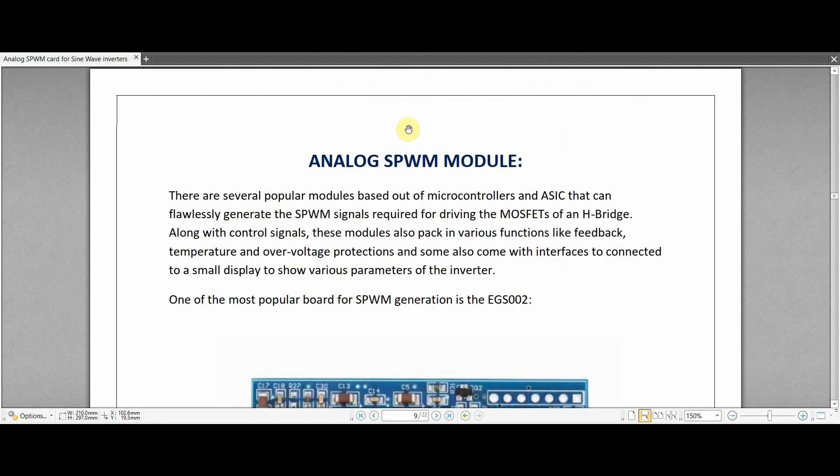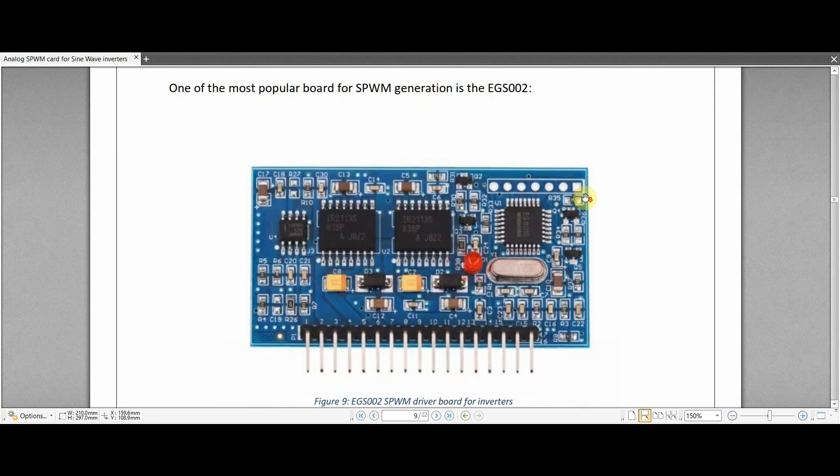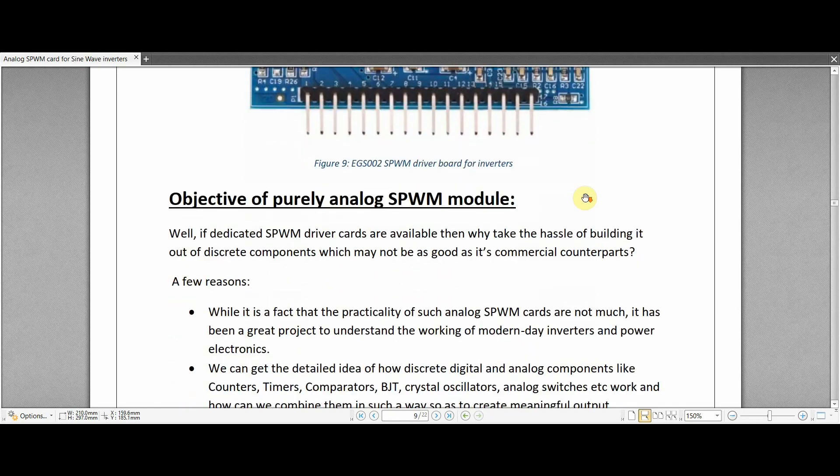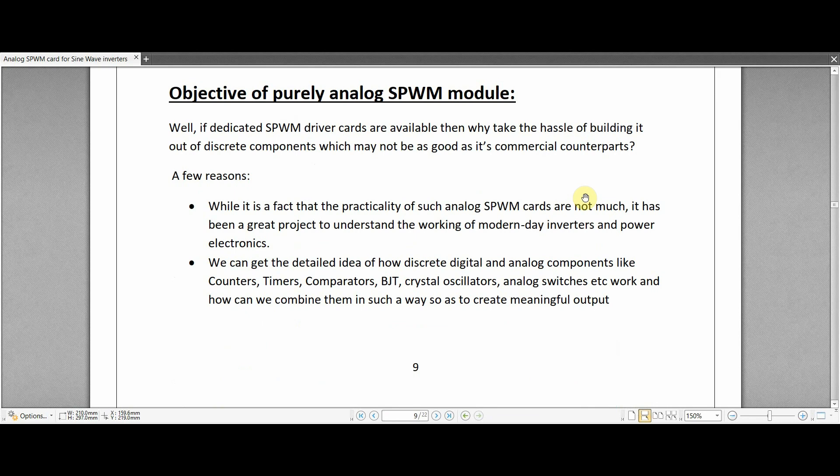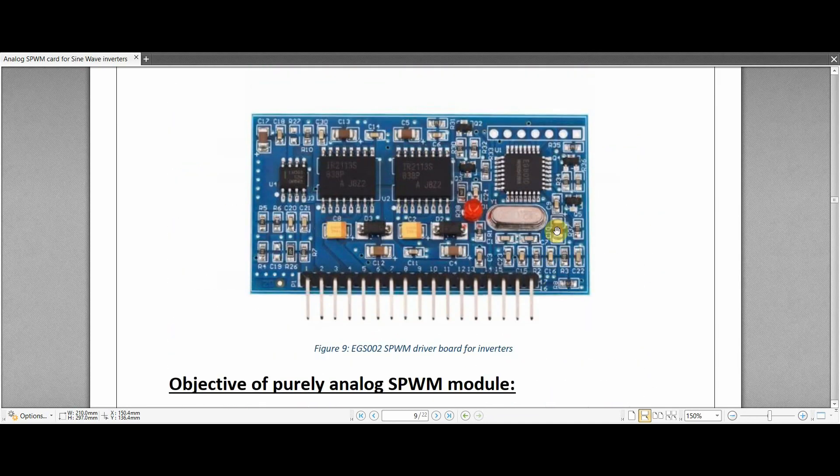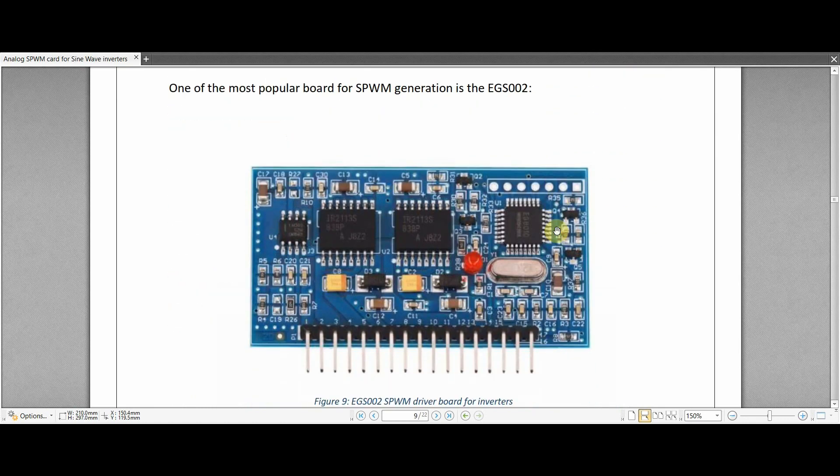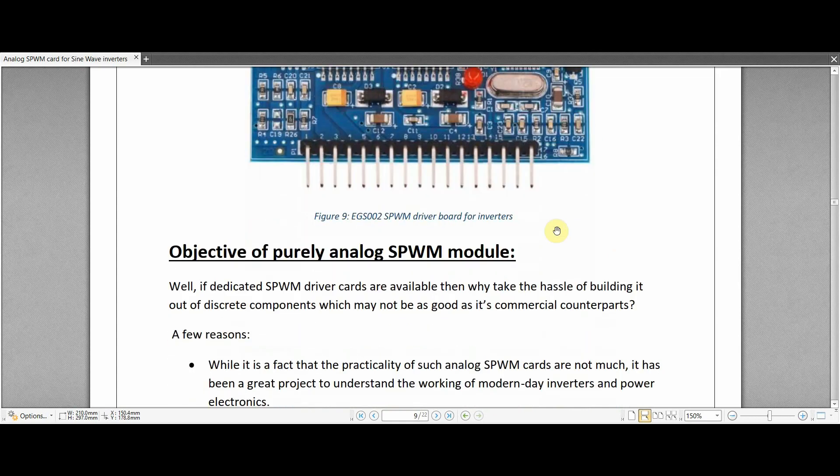A question naturally arises: why use the analog SPWM module and take the hassle and trouble of building such complicated analog circuit where more easily available ASIC controlled and microcontroller based SPWM generators like the EGS002 are easily available? Well, this project has more to do with learning about the different analog components like comparators, oscillators, timers, crystals, analog switches, and how we can combine them to create a meaningful circuit. The analog SPWM card is probably not a good substitute to the ASIC controlled EGS002 but it can generate quite stable sine wave signals which can actually be used as an output for inverters.